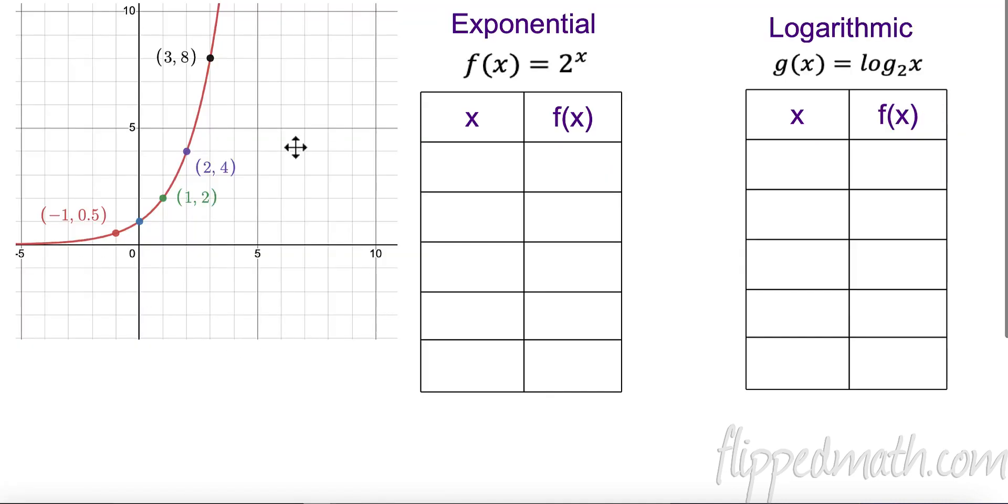So here we have an exponential function. Let's just write some of these points out so we know what they are. This is negative 1, 0.5 or one half. Then this point here is 0, 1. The next one is 1, 2, then 2 and 4, 3 and 8. That's key here.